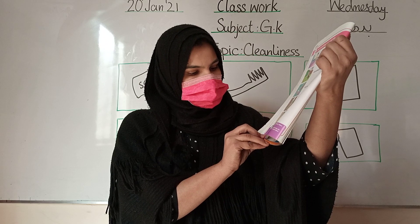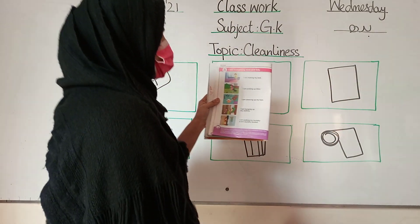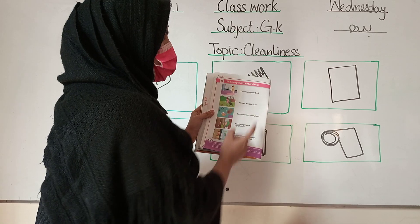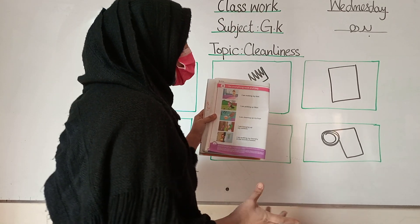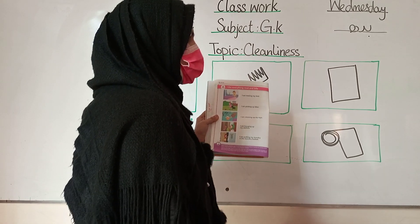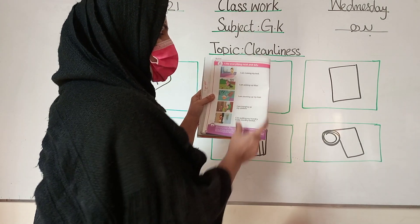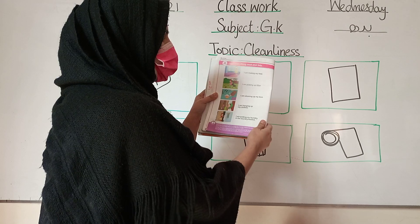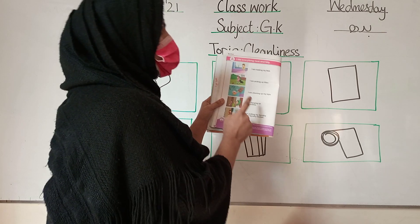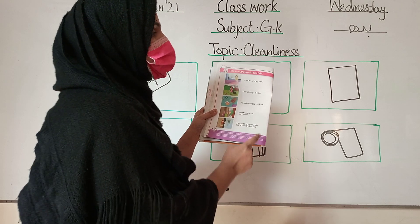Everyone open page number 34. I like everything neat and tidy. In the first picture, the girl is making her bed — apni bed ko clean kariye. The next picture: I am picking my litter — the girl is picking the garbage. The third picture: I am cleaning my toys. And the fourth picture: I am hanging up my clothes. Then I am putting my laundry in the laundry basket.